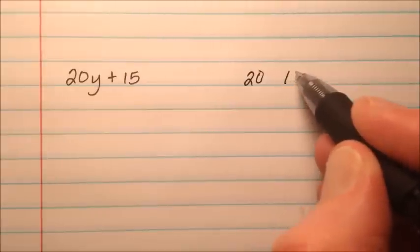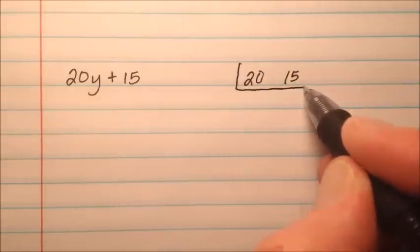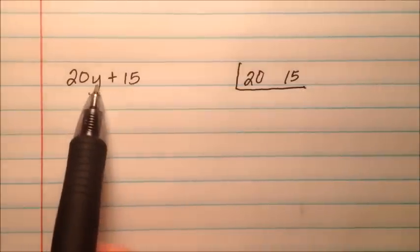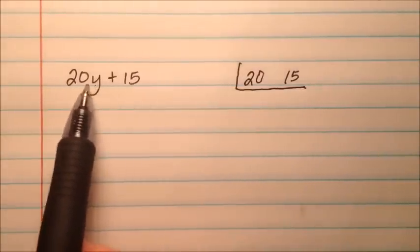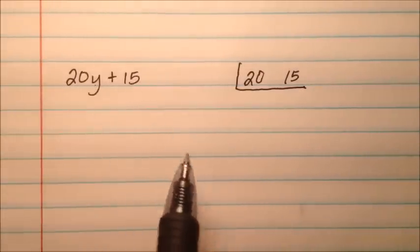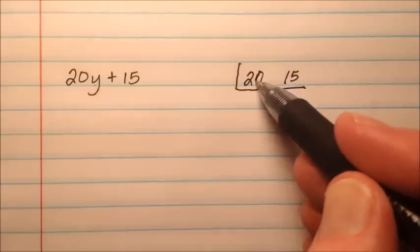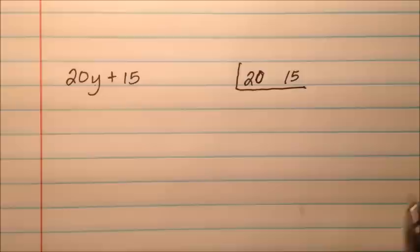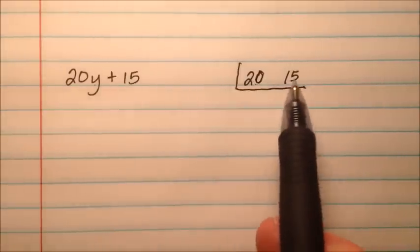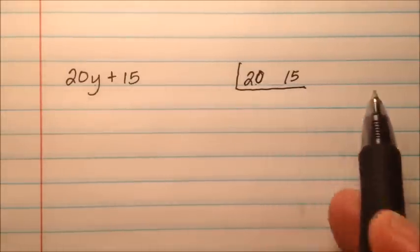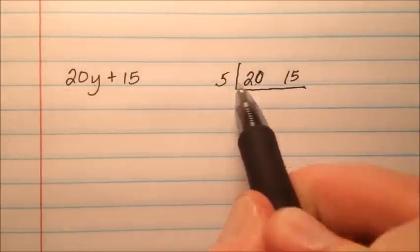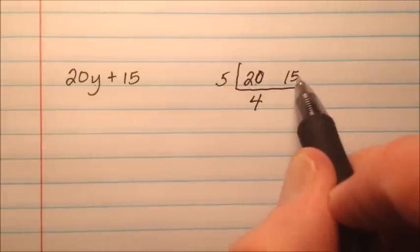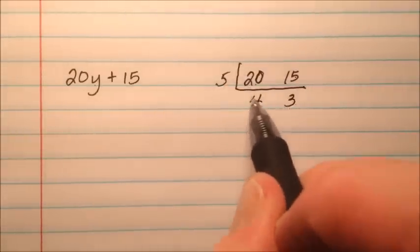So let's think about the greatest common factor for a moment. We're going to ignore the variable, because there's only one variable and both terms don't have it, so we're going to ignore that for now. So let's just talk about these numbers, 20 and 15. What's the greatest common factor here? Well, is there anything that will divide out of both of them? Well sure, a 5 will, 20 divided by 5 is 4, 15 divided by 5 is 3.